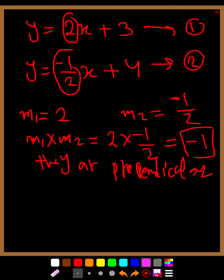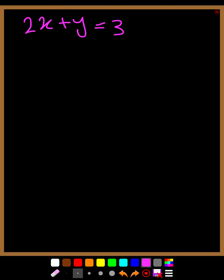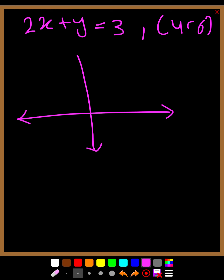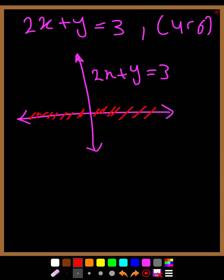Let's have an example. We need to find the equation of the line that is perpendicular to the line 2x plus y equals 3, and passes through the point (4, 6). The first thing to do is take the equation given: 2x plus y equals 3, and arrange it to make y the subject.